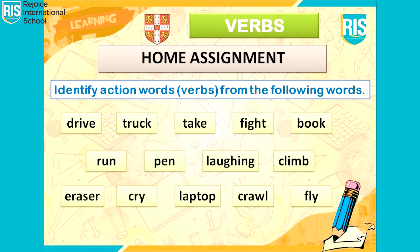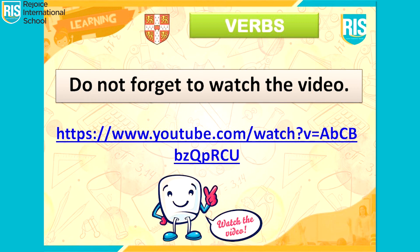Students, now it's time for your home assignment. Identify the verbs from the following words. Read each word and identify the verb. If it is a verb, make a list in your notebook. We shall discuss the same in our virtual class session. Do not forget to watch the video. Kindly note the link mentioned here. I hope you all have understood what verbs are — they are nothing but action words. Try and do a few actions and ask your family members to identify them.